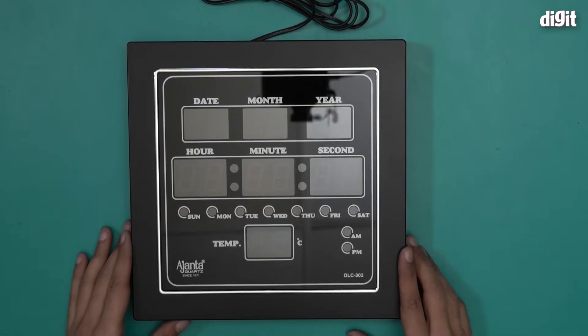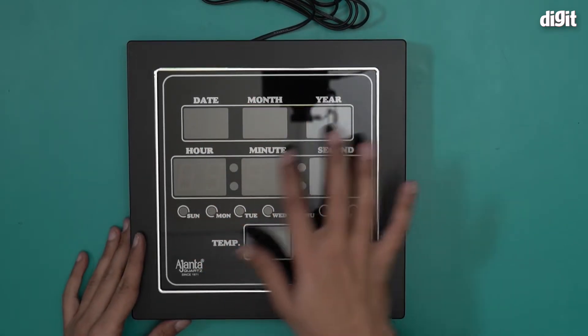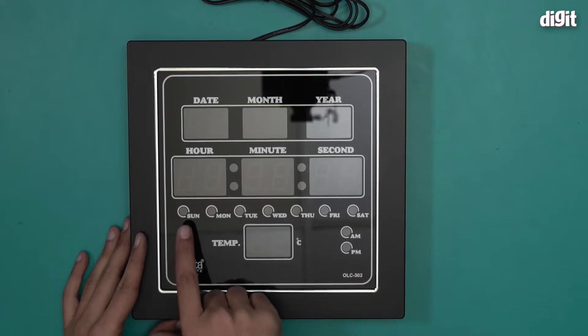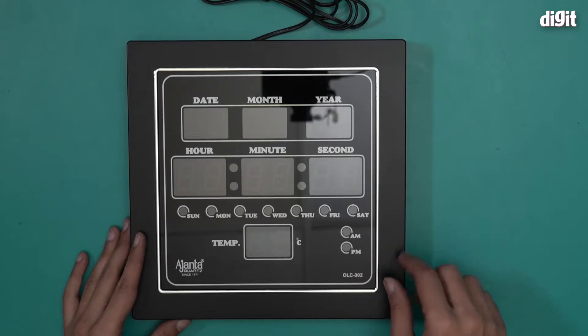So this particular wall clock will show you everything like date, month, year, hour, minute, second, day of the week, even temperature and time of AM-PM as well.